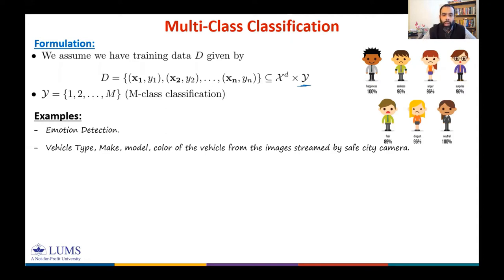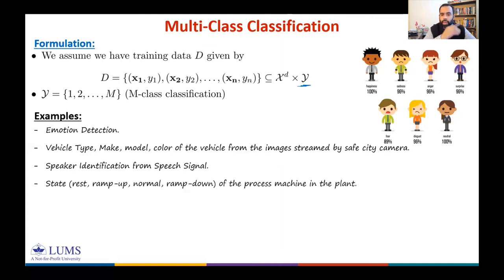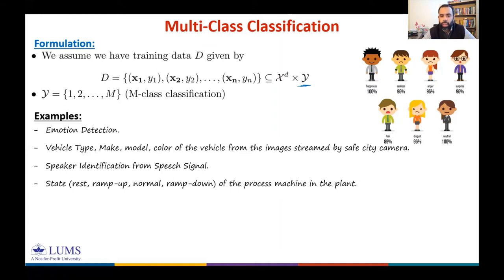Another example: you have a speech signal and you want to identify the speaker. If you want to find out gender from the speech signal, that is a binary classification problem. If you want to identify the speaker, this is an n-class classification problem. Another example: you have sensors mounted on a machine and from their measurements you want to find out whether the machine is in a normal state, rest state, transitioning to a non-normal state, or ramping down to zero. This could be another type of multi-class classification.